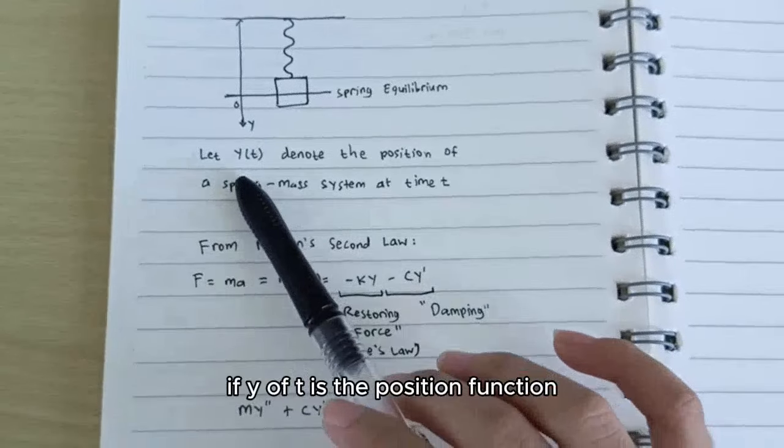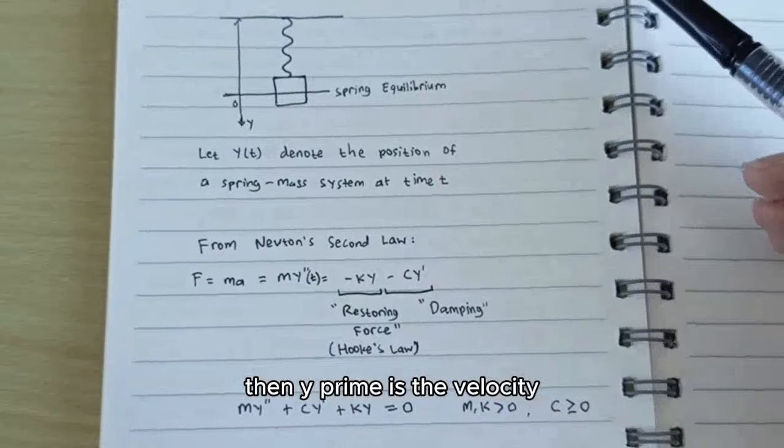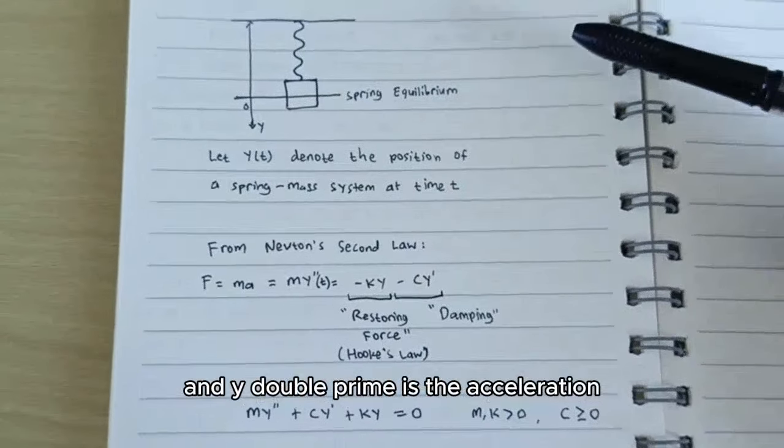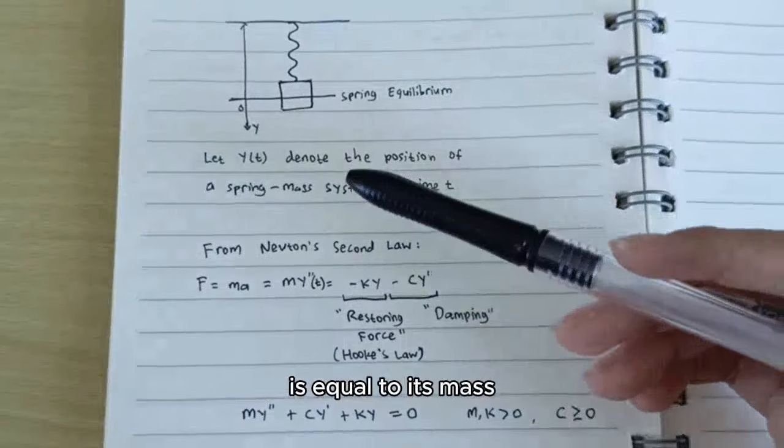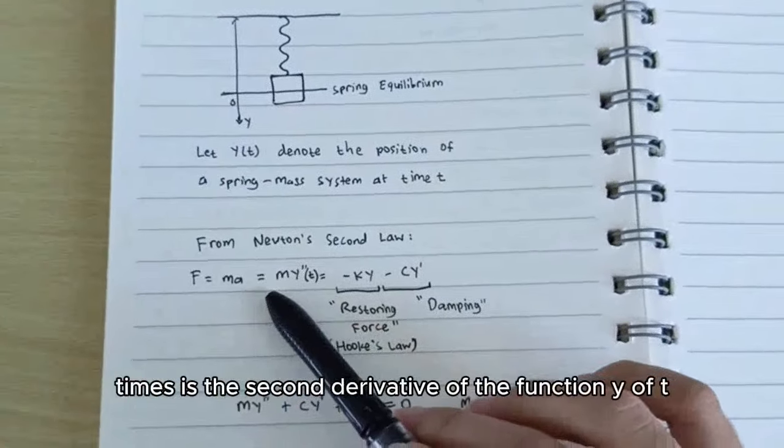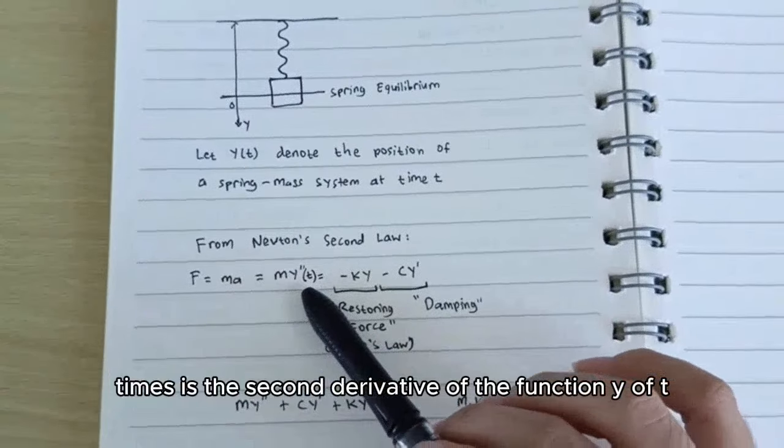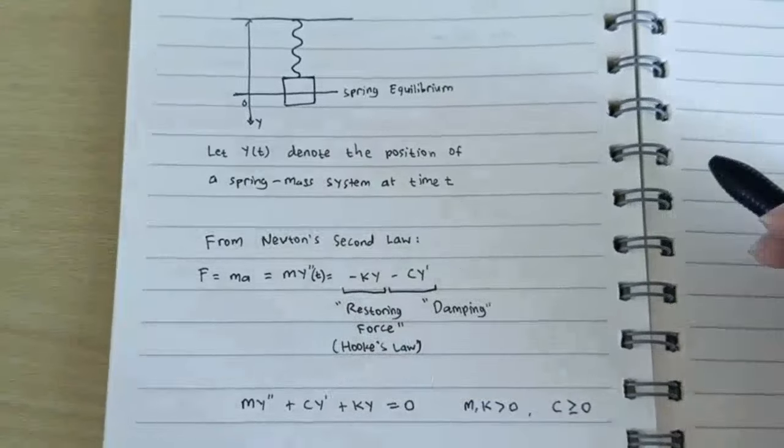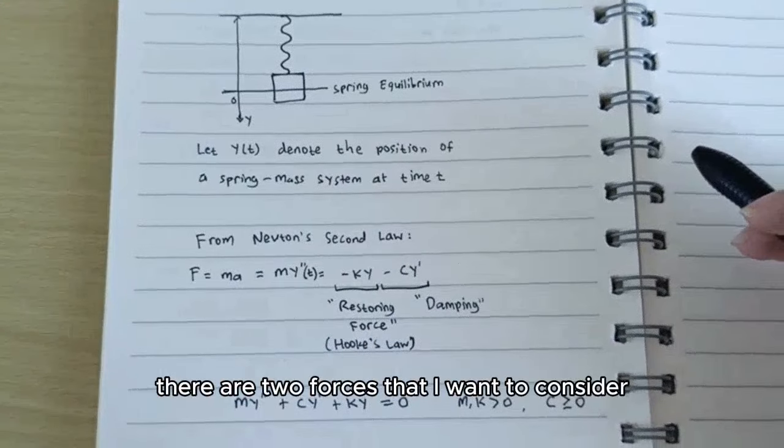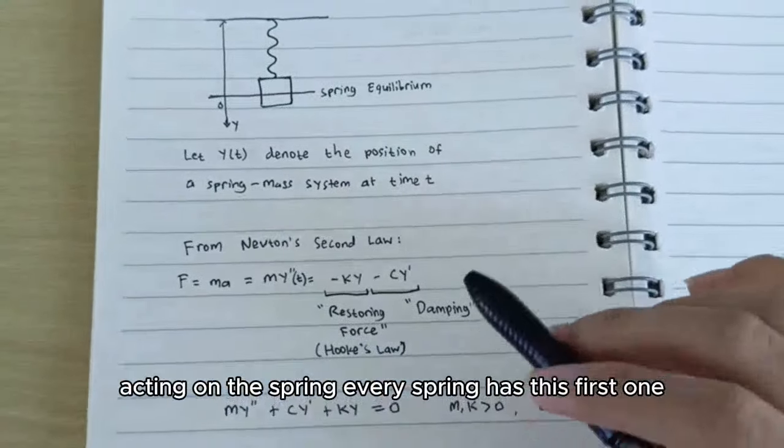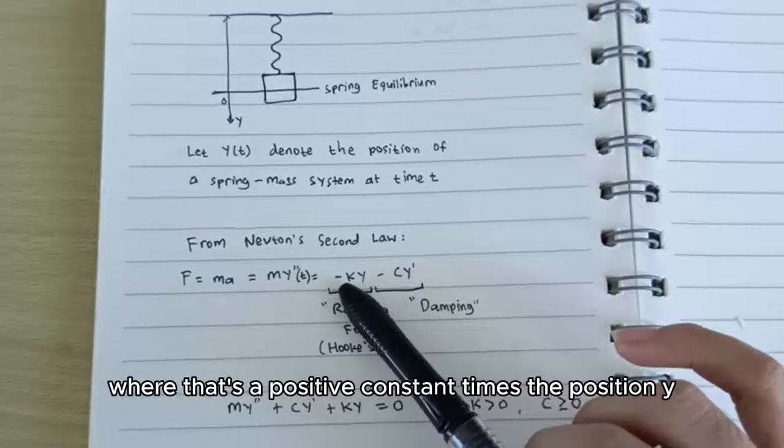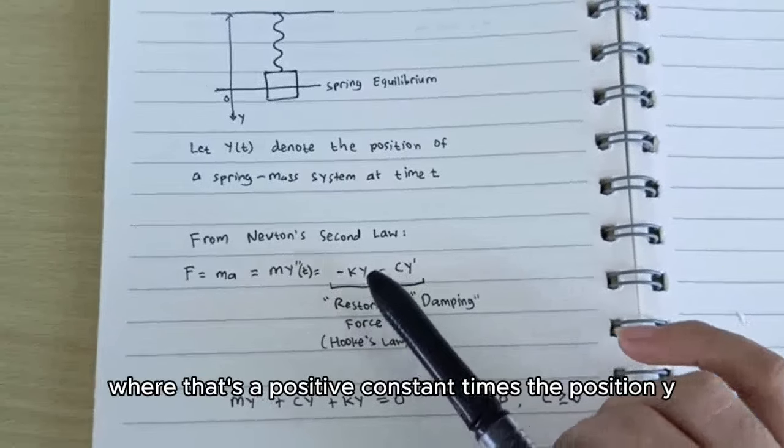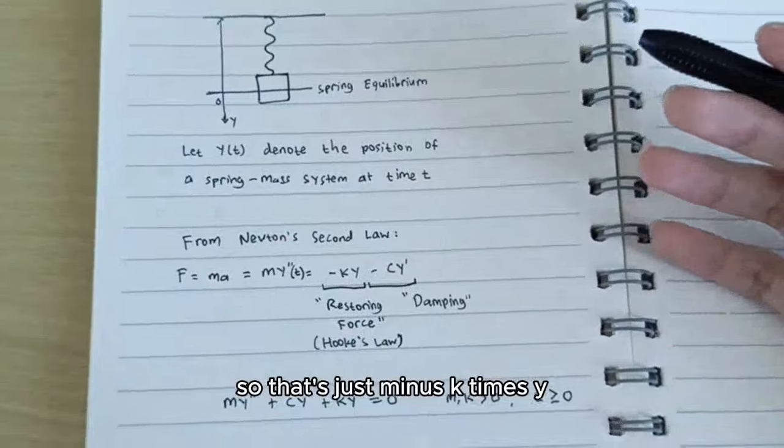If y is the position function, then y prime is the velocity and y double prime is the acceleration. So the total force acting on the spring is equal to its mass times its second derivative of the function y. There are two forces that I want to consider acting on the spring. Every spring has this first one, minus k, where that's a positive constant, times the position y. So that's just minus k times y.